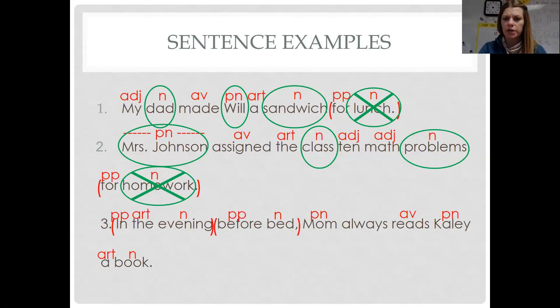Mom. What does mom do? She reads. And then always is always an adverb. Now let us circle our nouns. Evening. Bed. Mom. Kaylee. Book. And remember, these jobs cannot be in a prepositional phrase. Once you've gotten your prepositional phrase, you can throw them away. So now we know that mom is the subject. What does mom do? She reads. Mom reads what? Book. To whom? Kaylee.